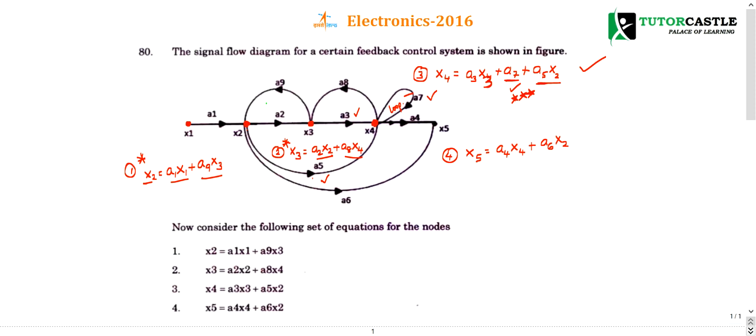Then let me go for the final node, that is x5. x5 has incoming gains a4 and a6. a4 is coming from x4, and a6 is from x2.